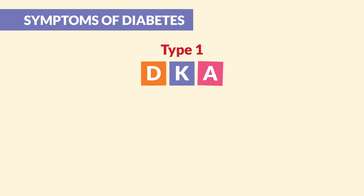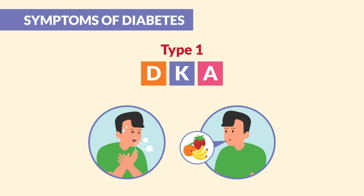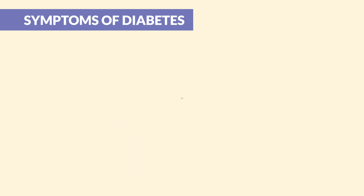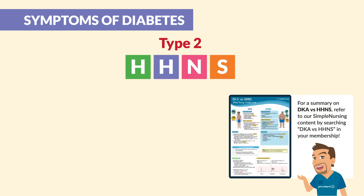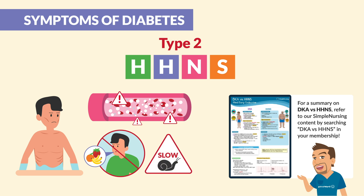In type 1 with DKA, we may see fruity-smelling breath and even Kussmaul respirations. In type 2 with HHNS, signs and symptoms may overlap, including extreme dehydration and very high sugar, but no ketones or acid, and it usually has a slower onset than DKA.